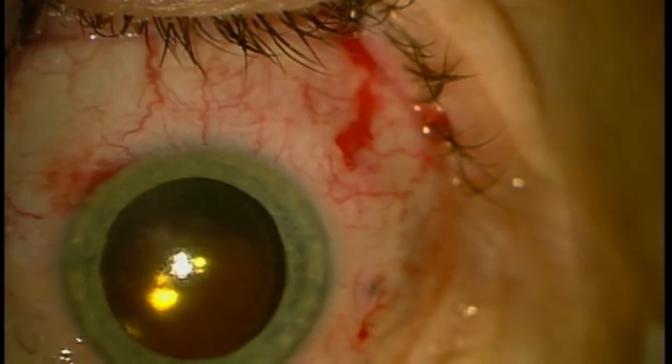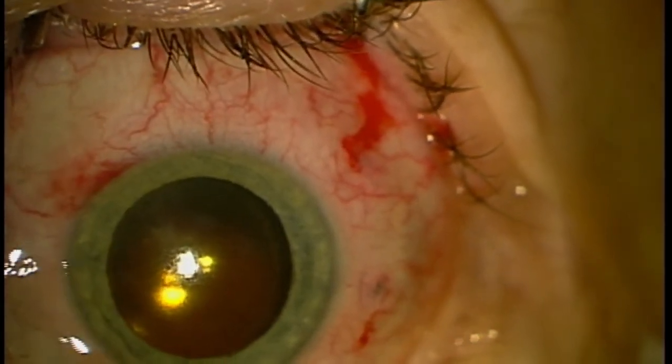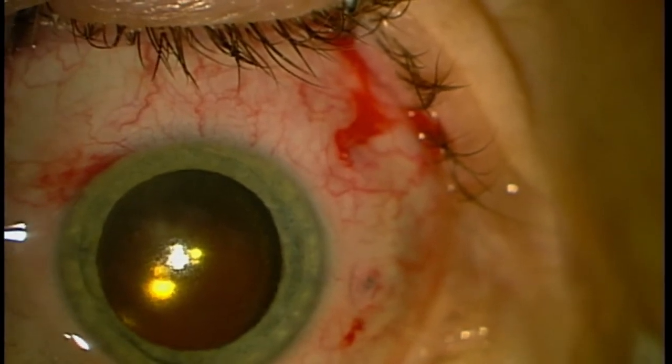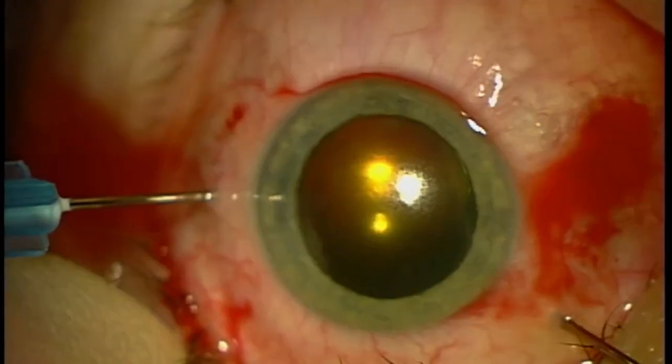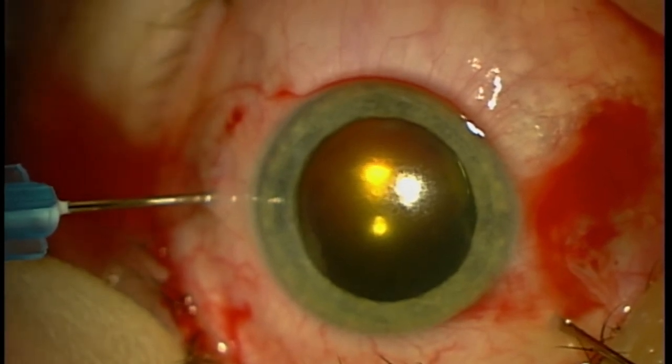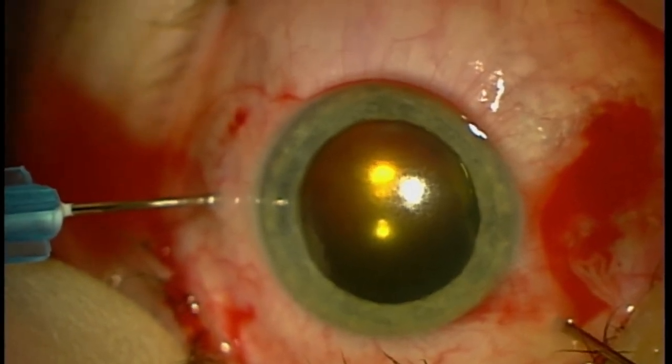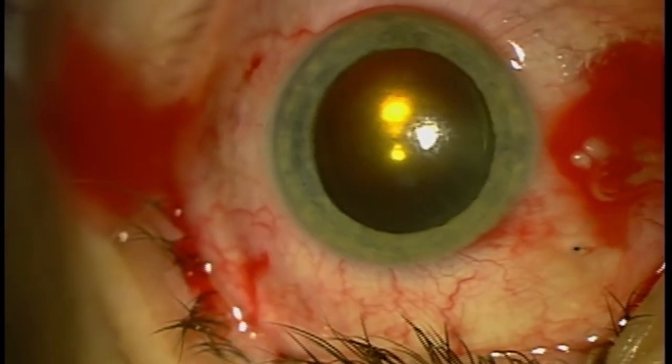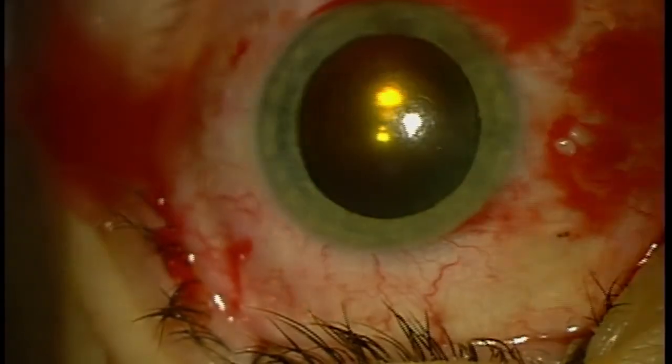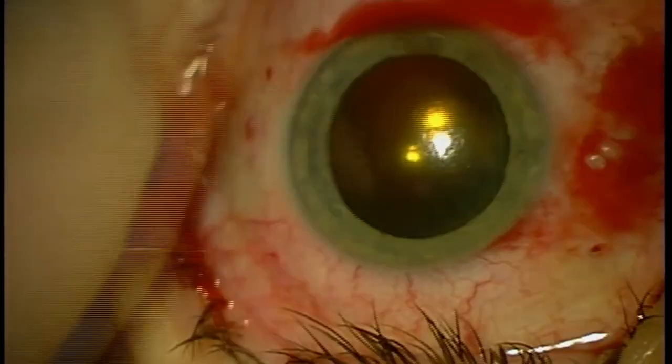Now the eye is full of air right now, and I am going to exchange the air with SF6. So you're going to see a needle. The needle on the left is actually injecting SF6 into the eye, and this needle on the lower right is actually the vent. Once we've exchanged the air for SF6, we're basically done.